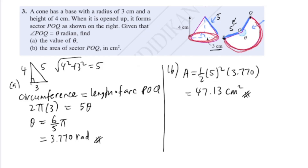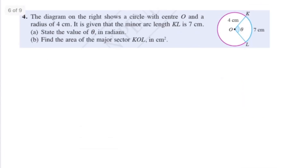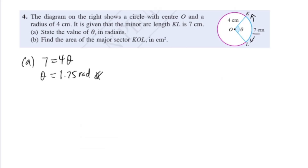Moving on to question 4. The diagram shows a circle with center O and radius 4 cm. It is given that the minor arc length is 7 cm. Find theta in radians. Using s equals r theta: theta equals 7 divided by 4, which gives 1.75 radians. Next, find the area of the major sector KOL.